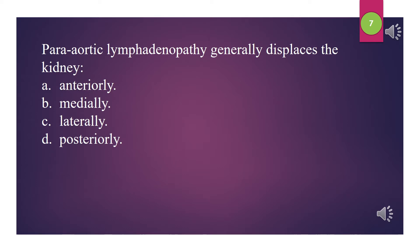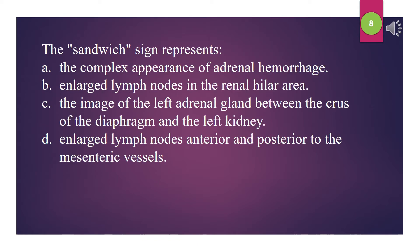Kidney is an intraperitoneal organ — True or false? Para-aortic lymphadenopathy generally displaces the kidney: A. Anteriorly. B. Medially. C. Laterally. D. Posteriorly. The answer is C: Laterally. The sandwich sign represents: A. The complex appearance of adrenal hemorrhage. B. Enlarged lymph nodes in the renal hilar area. C. The image of the left adrenal gland between the crus of the diaphragm and the left kidney. D. Enlarged lymph nodes anterior and posterior to the mesenteric vessels. The answer is D.